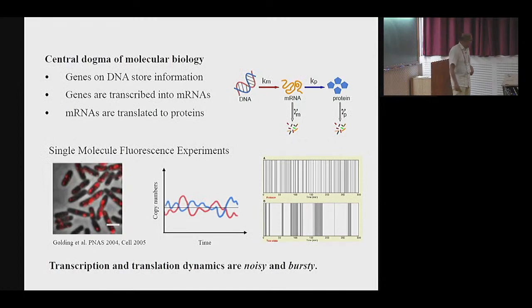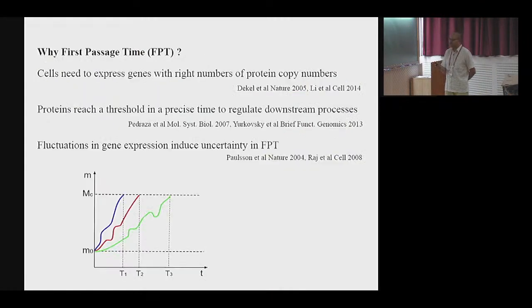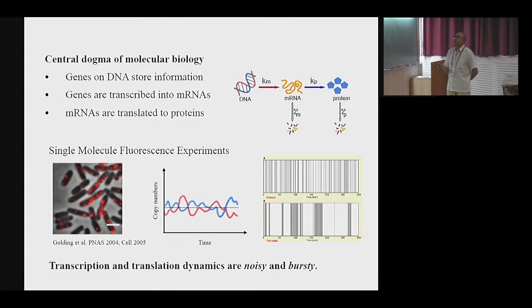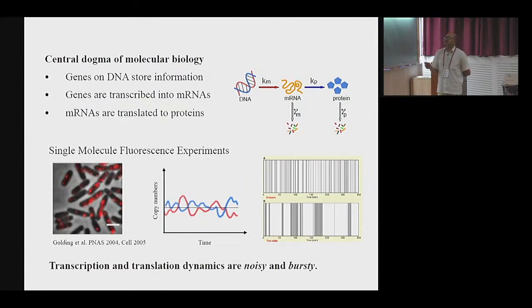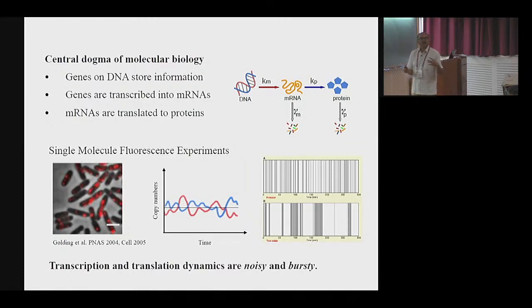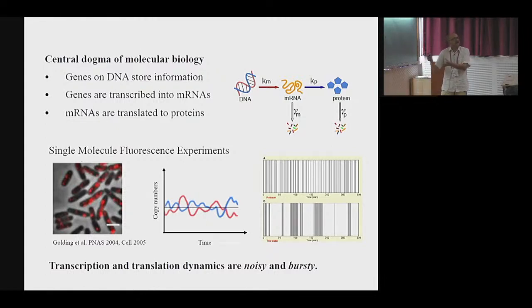This is the central dogma we are quite familiar with. There are genes which are the storehouse of information; they transcribe to give mRNAs at a certain rate, and these mRNAs translate to give proteins at a certain rate. All these molecules have a finite lifetime and they degrade. This process is like a birth-death process — DNA gives birth to mRNAs and the mRNAs die. If I monitor the mRNAs, you would expect the statistics to be Poisson, like collecting alpha particles in a Geiger-Müller counter.